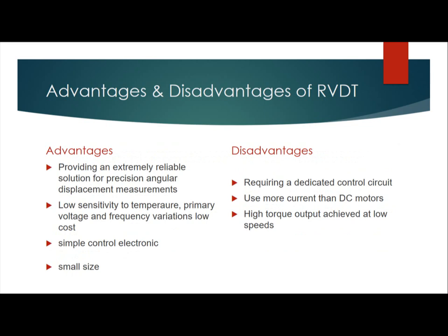Like RVDT, LVDT also has advantages and disadvantages. Advantages of LVDT include providing an extremely reliable solution for precision angular displacement measurement, low sensitivity to temperature, primary voltage and frequency variations, low cost, simple control circuit, and small size. Disadvantages of LVDT include requiring a dedicated control circuit, using more current than DC models, and high torque output achieved only at low speeds.